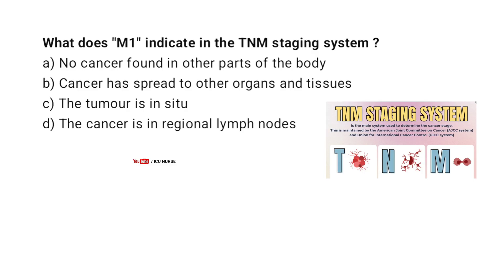What does M1 indicate in the TNM staging system? A. No cancer found in other parts of the body. B. Cancer has spread to other organs and tissues. C. The tumor is in situ. D. The cancer is in regional lymph nodes.